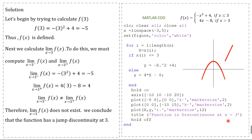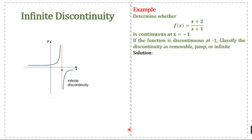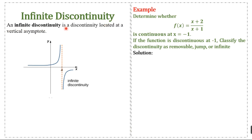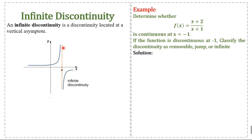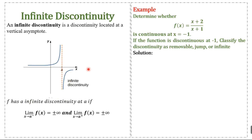Now we have infinite discontinuity. An infinite discontinuity is a discontinuity located at vertical asymptotes. We can see the vertical asymptotes in the graph. The definition: f has an infinite discontinuity at a point a if the left limit equals ±infinity and the right limit equals ±infinity.